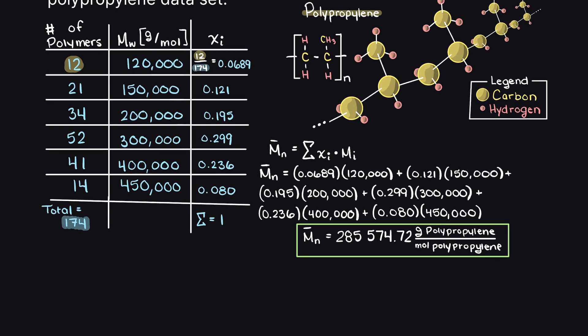Now, to find the degree of polymerization, we just need to divide the number average molecular weight of our polymer sample by the monomer molecular weight. Since we know the number average molecular weight, we just need to find the monomer weight, which we can find by adding the molecular weight of all of our atoms in our repeating unit, which is propylene. Which is 3 carbons and 6 hydrogens as you can see here.